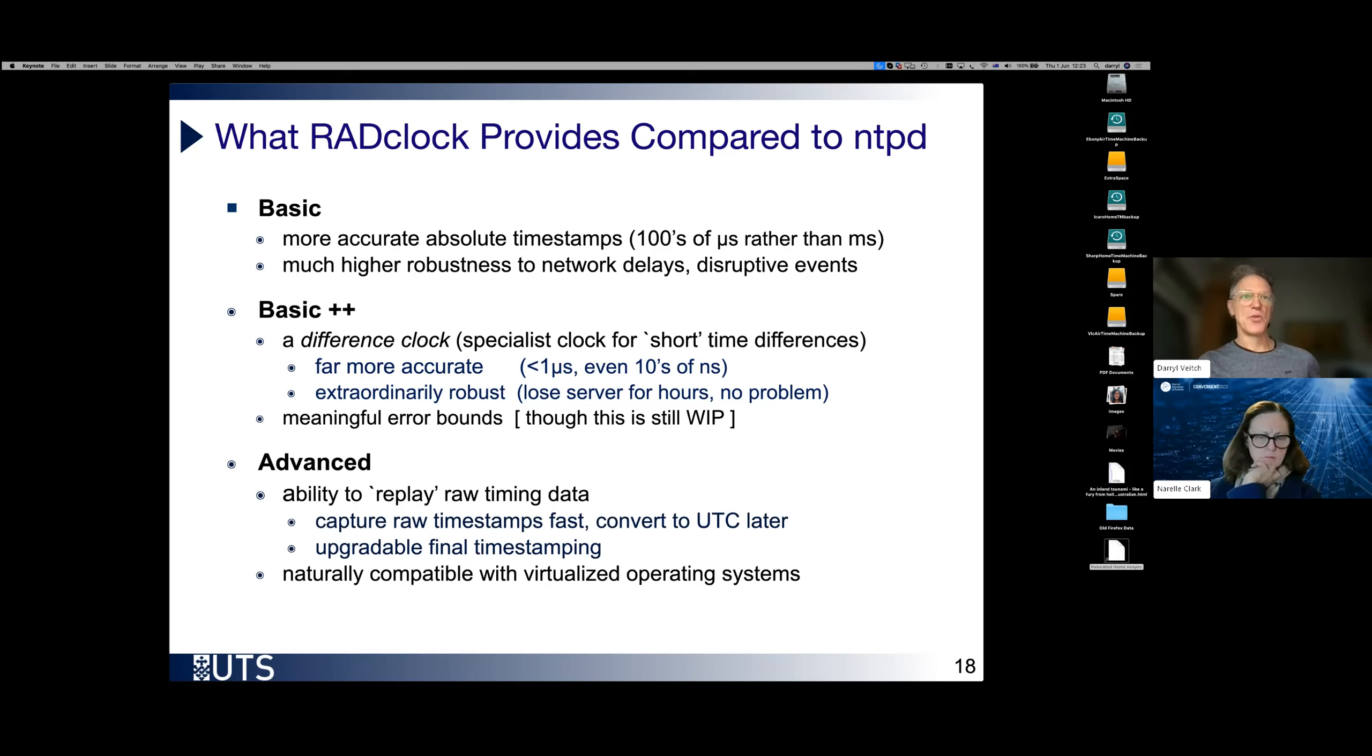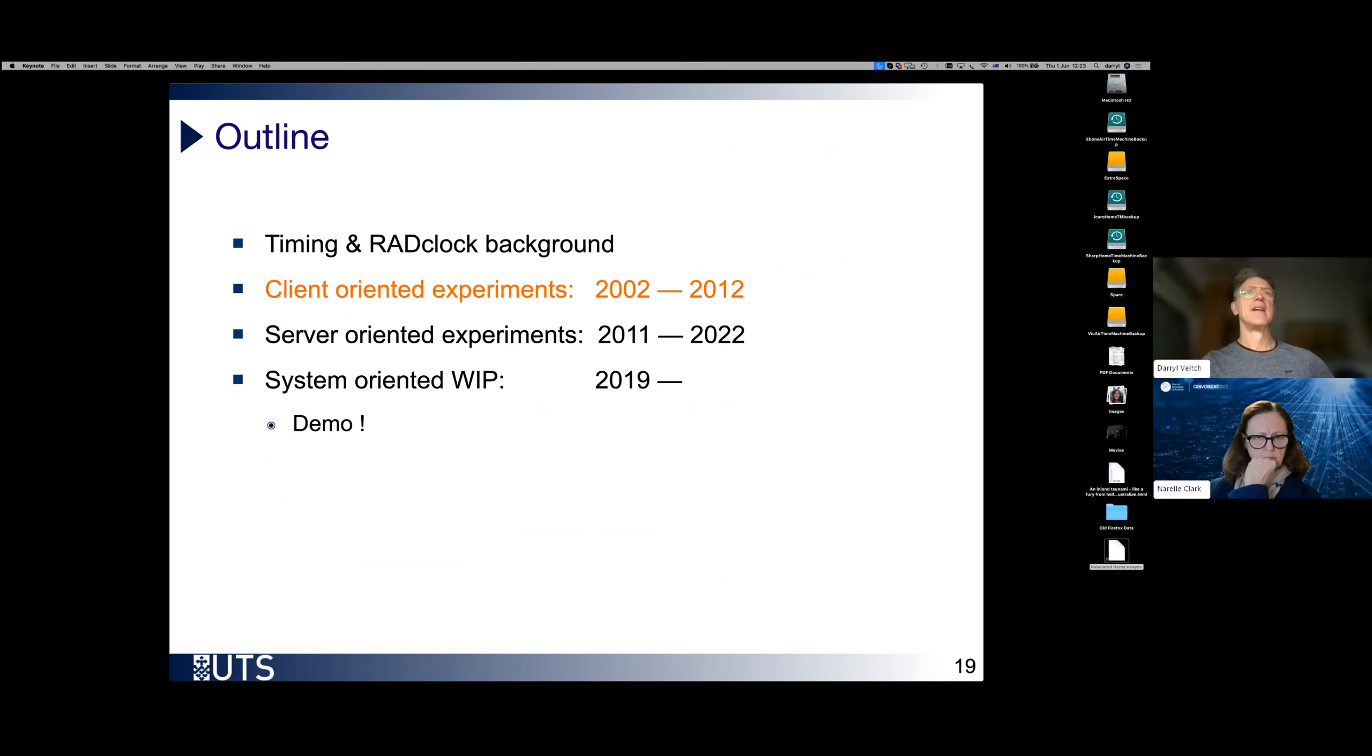And we have more advanced capabilities as well. We can store the raw timing data and replay it later on. So there are many ways in which this could be used. One interesting way is you could improve the clock algorithm and then retrospectively improve all the timestamps. And then change your mind and change them back.